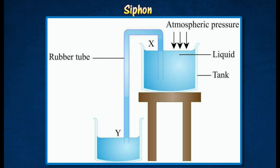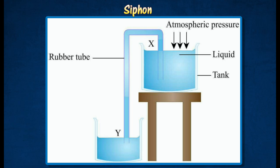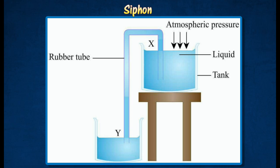At point X, the higher atmospheric pressure acting on the surface of the liquid pushes the liquid upwards into the rubber tube. The difference in air pressure produces a continuous flow through the rubber tube, as long as point Y is at a lower level than the liquid level in the tank.